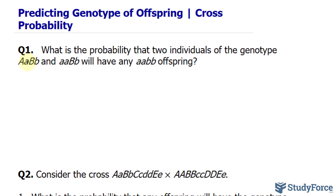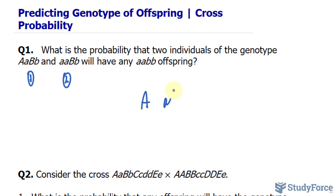For example, since this is the first parent and that's the second parent, the first parent has the genotype for this gene being capital A little a — one dominant, one recessive — and the second parent has the genotype little a little a, which is homozygous recessive.